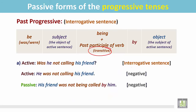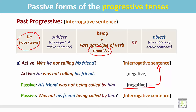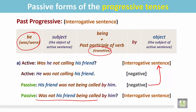'His friend was not being called by him.' This sentence is still in the negative as a statement. Now change this statement into an interrogative sentence. According to the structure, this passive sentence starts with the be verb. We place the be verb at the beginning of the sentence, and that's all — it changes into an interrogative sentence: 'Was not his friend being called by him?' This is an interrogative sentence in the passive form.